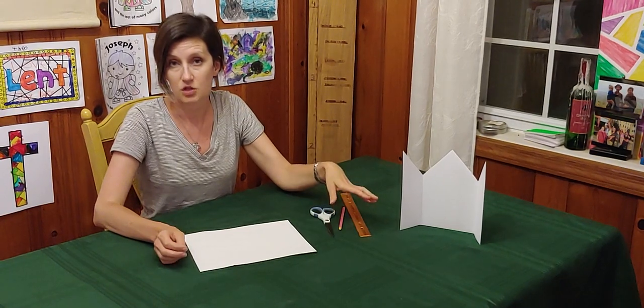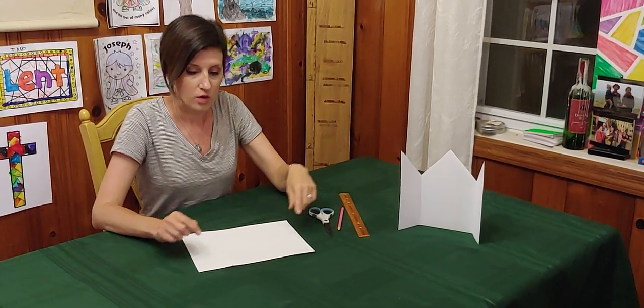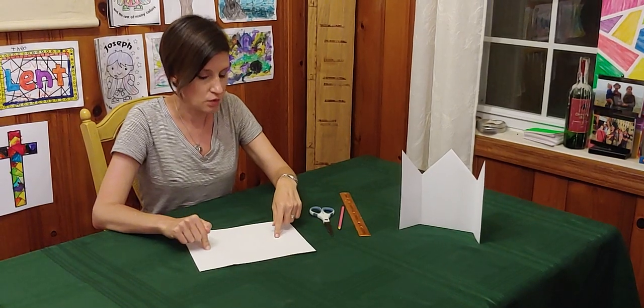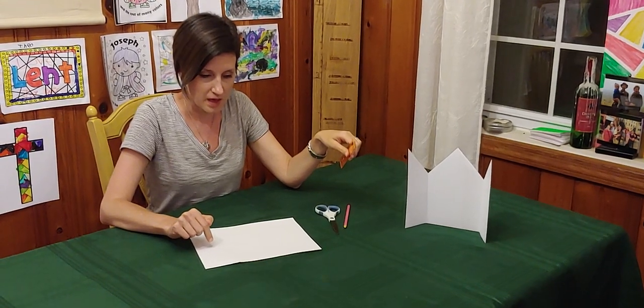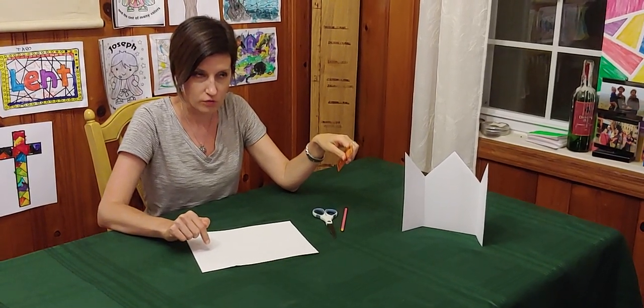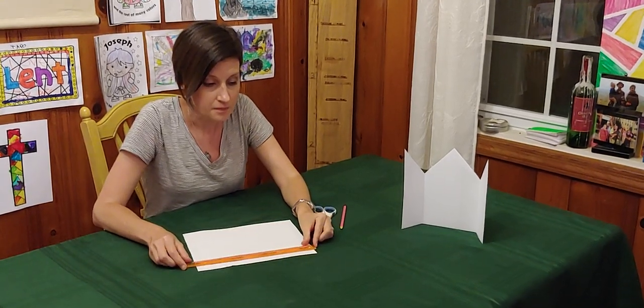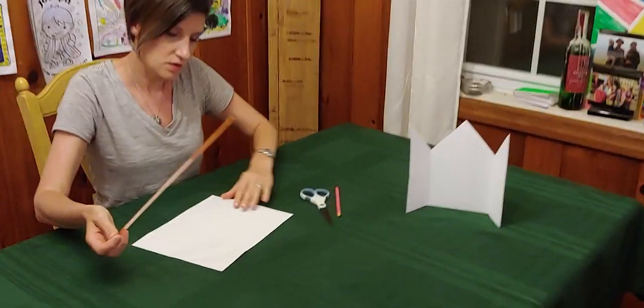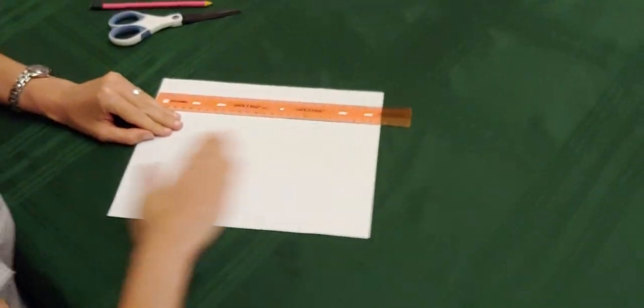And then whatever it is you want to color your triptych with. For the measuring, you are going to use your ruler, and usually the paper that we have is either 12 or 11 inches long. This one is 11 inches long, and so what you're going to need to do is find the center of the paper lengthwise.